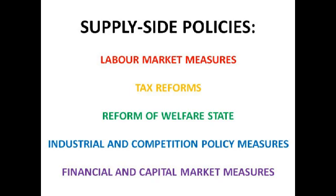A reform of the welfare state is a really important supply side policy. If we reduce state welfare benefits, that's an incentive for people who are voluntarily unemployed to choose employment over benefits, and thus reduces the poverty trap — when people choose to stay on benefits rather than seek work because they can get more money on benefits. Obviously, reducing unemployment leads to an increase in production and also an increase in aggregate demand if people have got more money, and an increase in aggregate demand leads to a further rise in output.